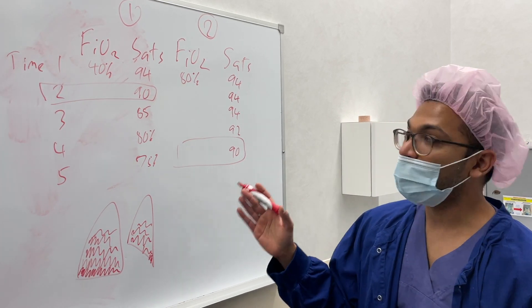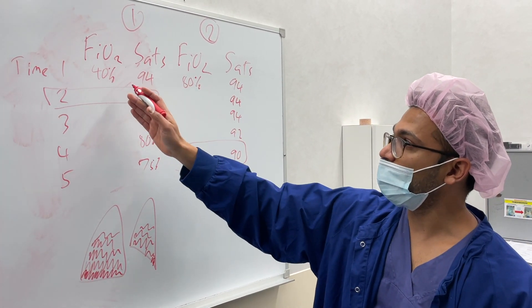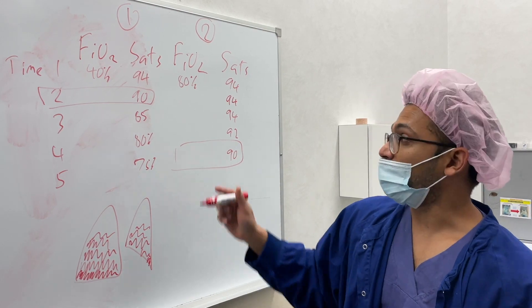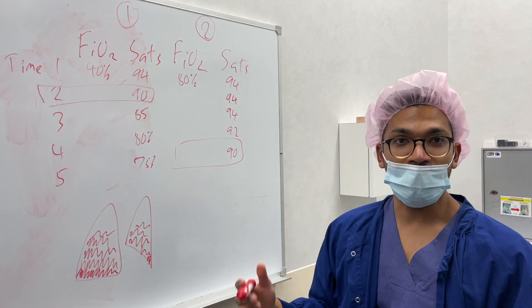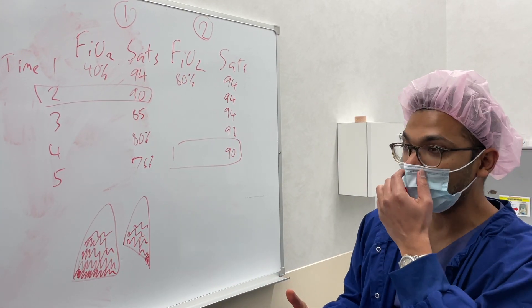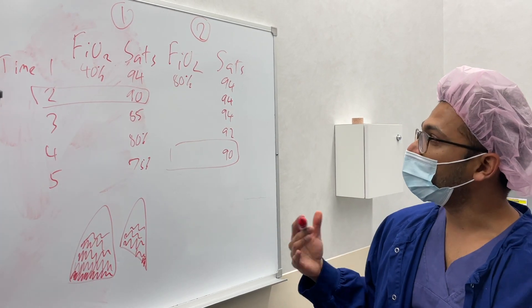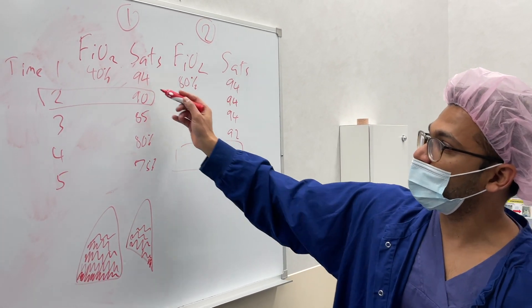So that's my argument. If I have my FiO2 lower in sick lungs but still keeping the patient safe - so they've got 90% or above - that enables me to identify when there's a problem, increase the FiO2, and have lots of time to solve that problem.